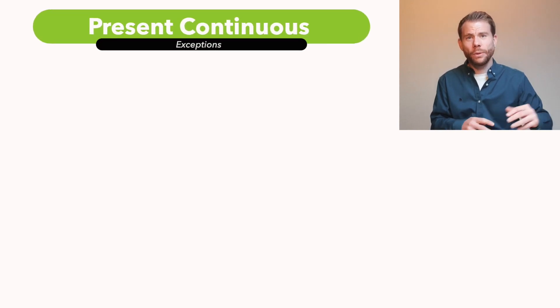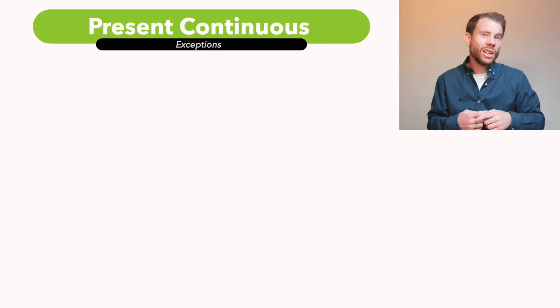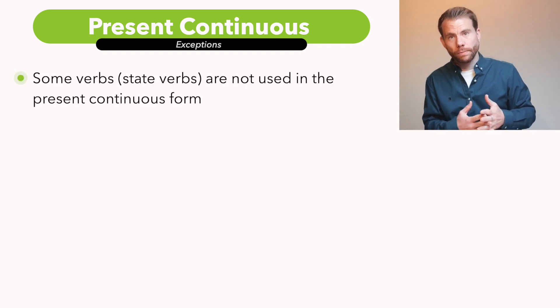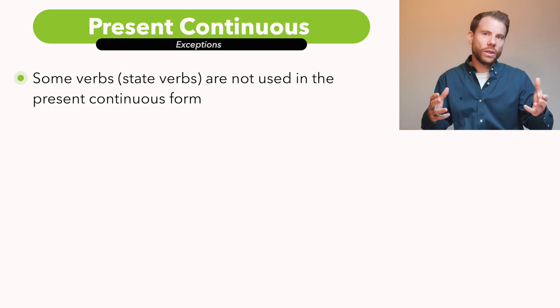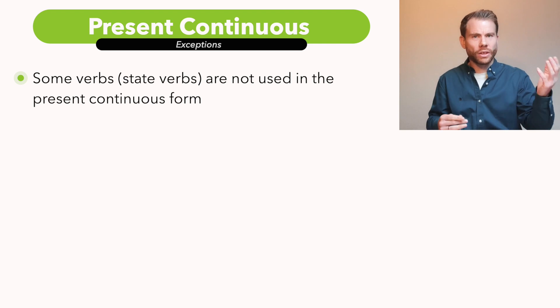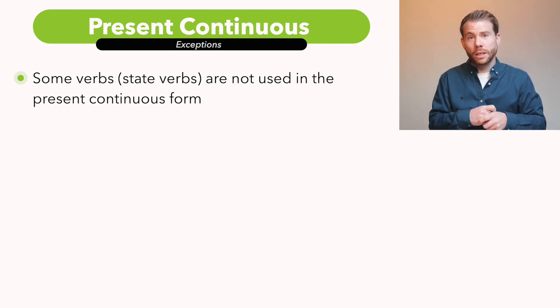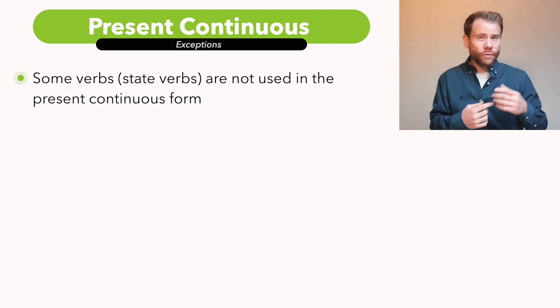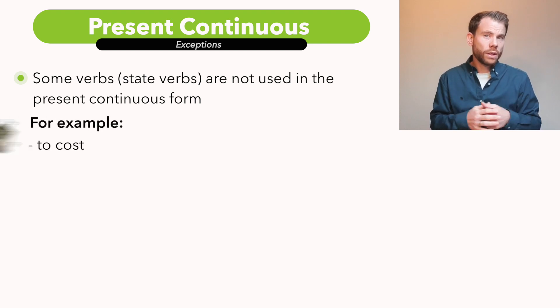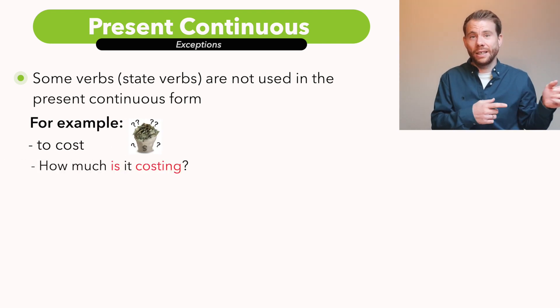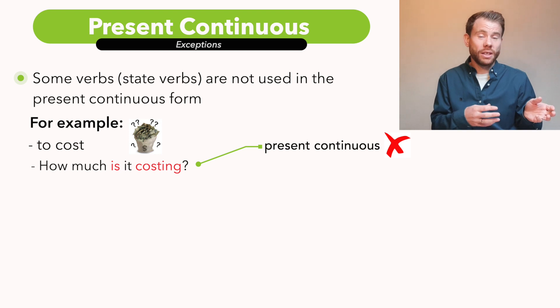As always with language, it's a little bit more complicated than that. With the present continuous, there are some verbs which are not used in the continuous form. The list is quite long — you can find it on the internet or in a grammar book. To give you some examples: the verb 'to cost' — it's never 'how much is it costing?' It's always 'how much does it cost?' Similarly, 'to weigh' — you can't say 'how much is it weighing?' It's always 'how much does it weigh?'